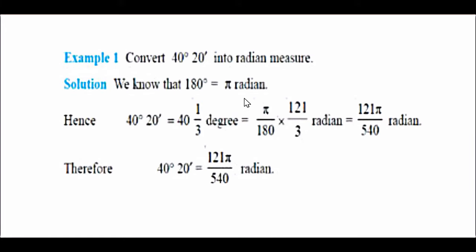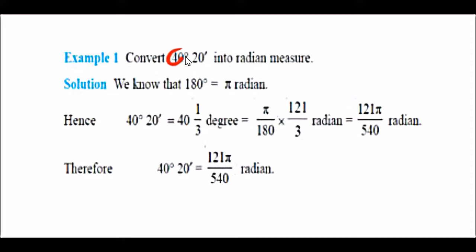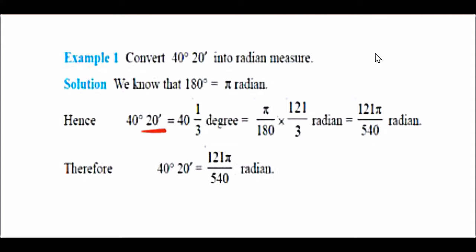Now let us go along with the equations. We need to convert 40 degrees 20 minutes into radian measure. We know that 180 degrees is π radians. This value has two parts: degrees and minutes. We need to convert the minutes into degrees first. So for 20 minutes, we divide by 60.